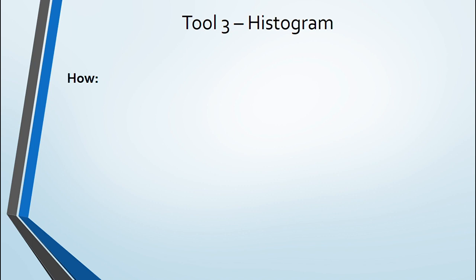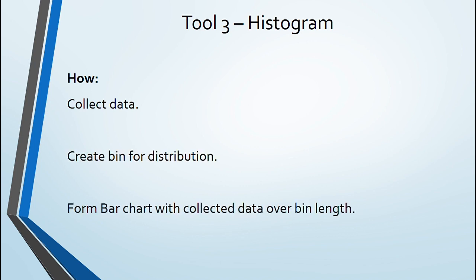So, how the histogram is created? First is to collect data for any variable under study. Create a bin or fixed frequency or an interval for data distribution. Finally, form a bar chart with collected data over bin range.